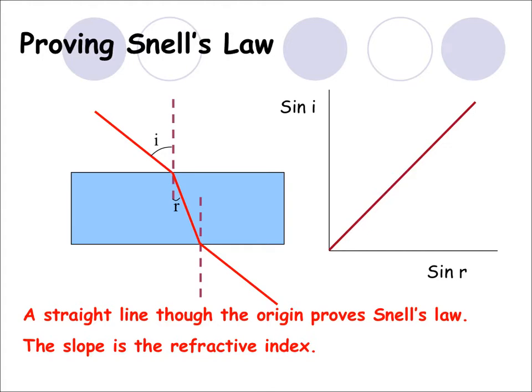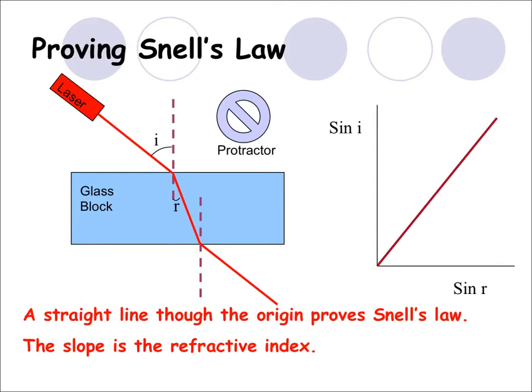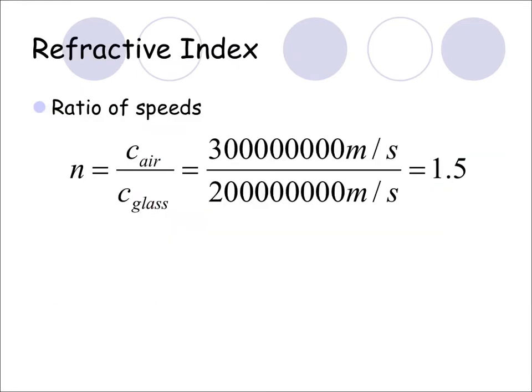This is the write-up I would expect. It's got a straight line going through the origin, which proves Snell's law. We also have to include a laser showing a light source, a protractor showing how we measure the angle, and we have to label the glass block. Everything has to be labelled. Any straight line through the origin in physics means that what's on the y-axis is proportional to what's on the x-axis. So sine i is proportional to sine r.